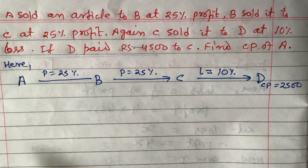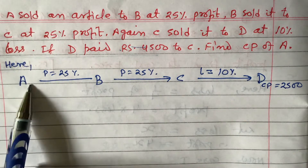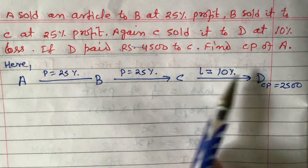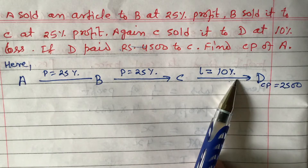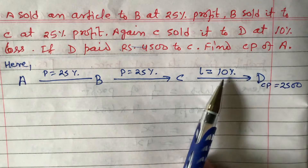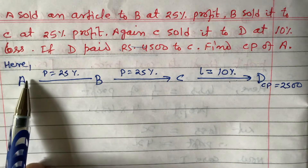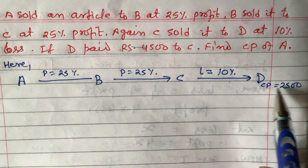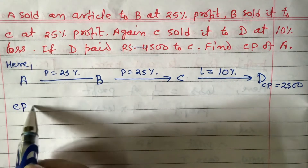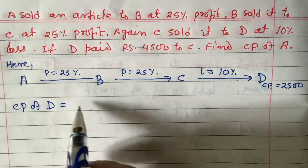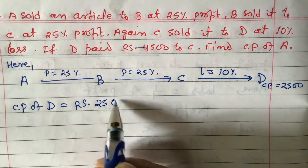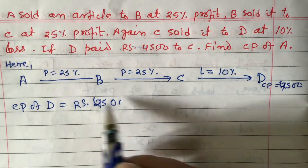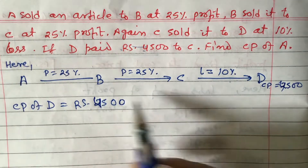If the cost price of A were given, we would go forward from A to B to C to D. Now, CP of D = ₹4,500. Since C is selling to D, the selling price of C and the cost price of D are the same, so SP of C = ₹4,500.